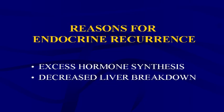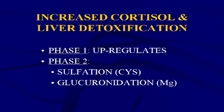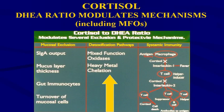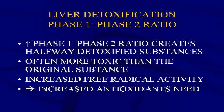Endocrine gland imbalances can stem from too much or too little hormone — either overproduction or insufficient liver breakdown. Cortisol up-regulates phase one and stresses sulfation levels, which can be screened with cystine or other sulfur products and glucuronidation. Increasing the phase one to phase two ratio creates halfway-detoxified substances that are often more toxic than the original substance, and increasing free radical activity increases antioxidant needs.